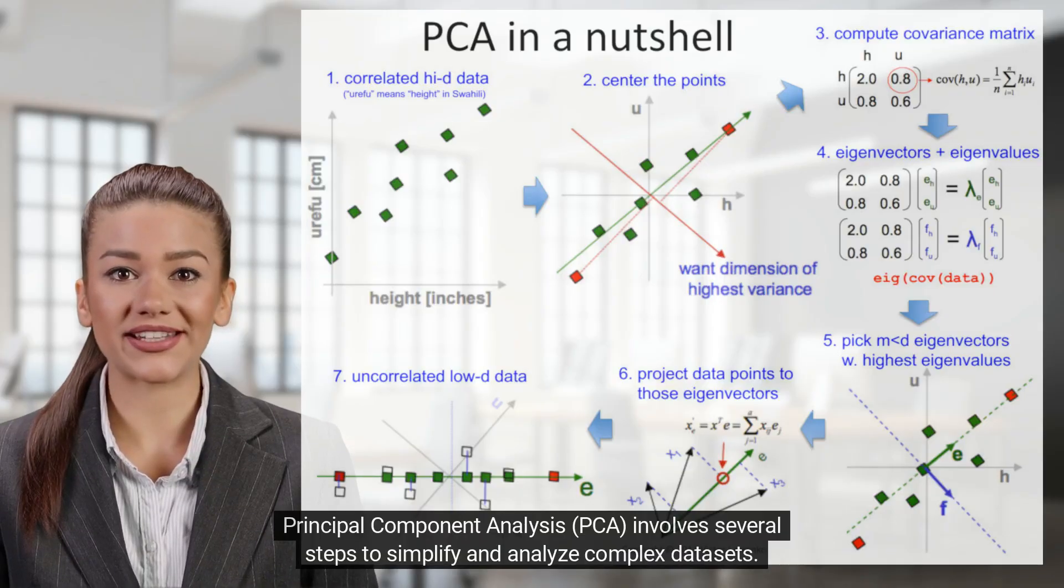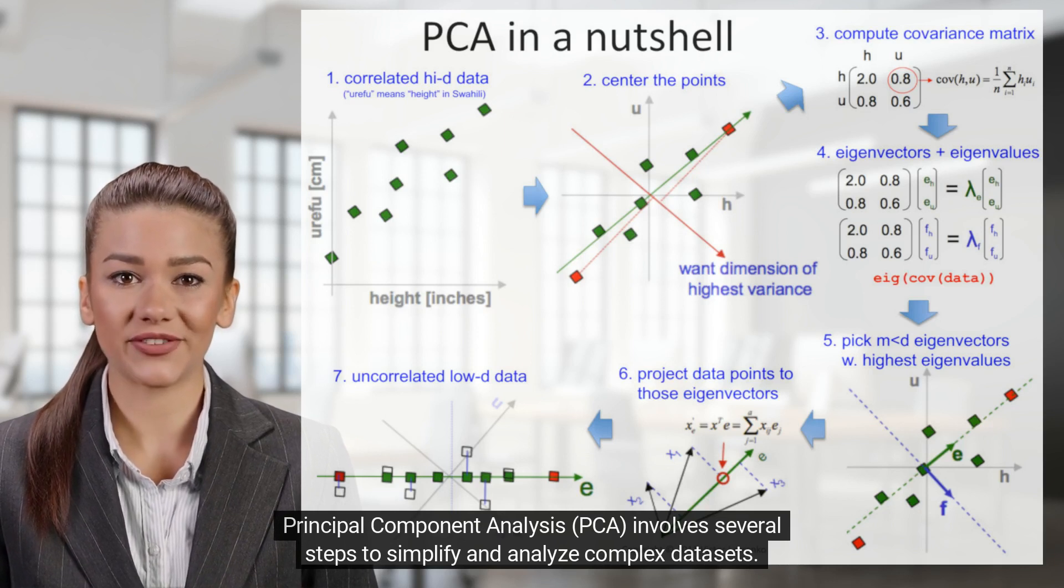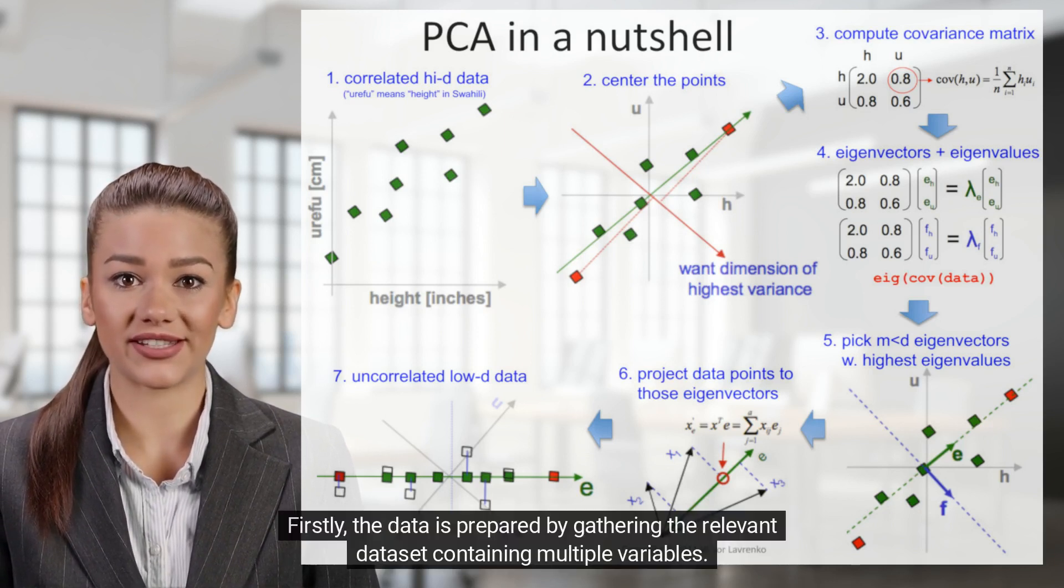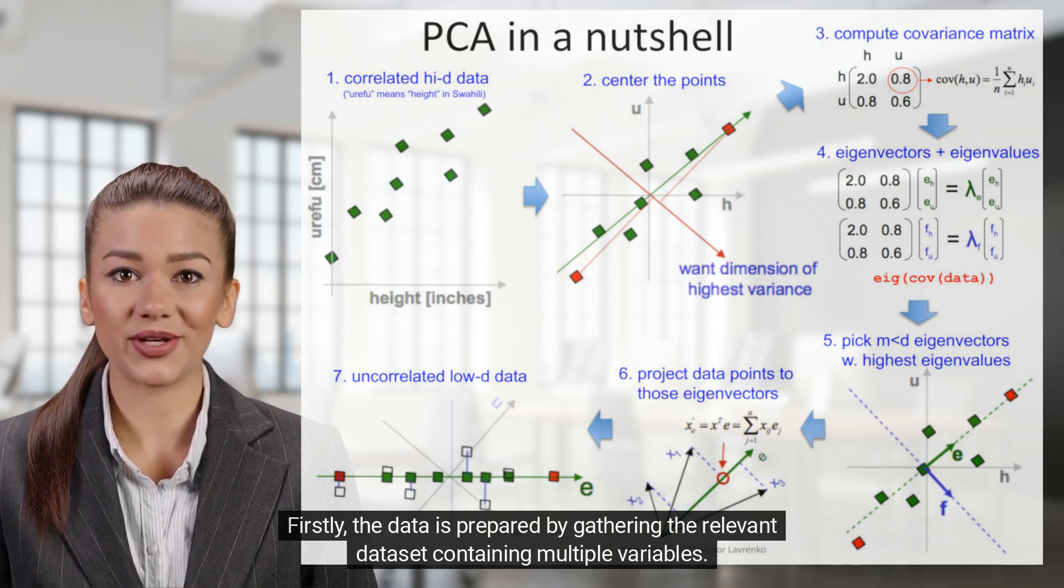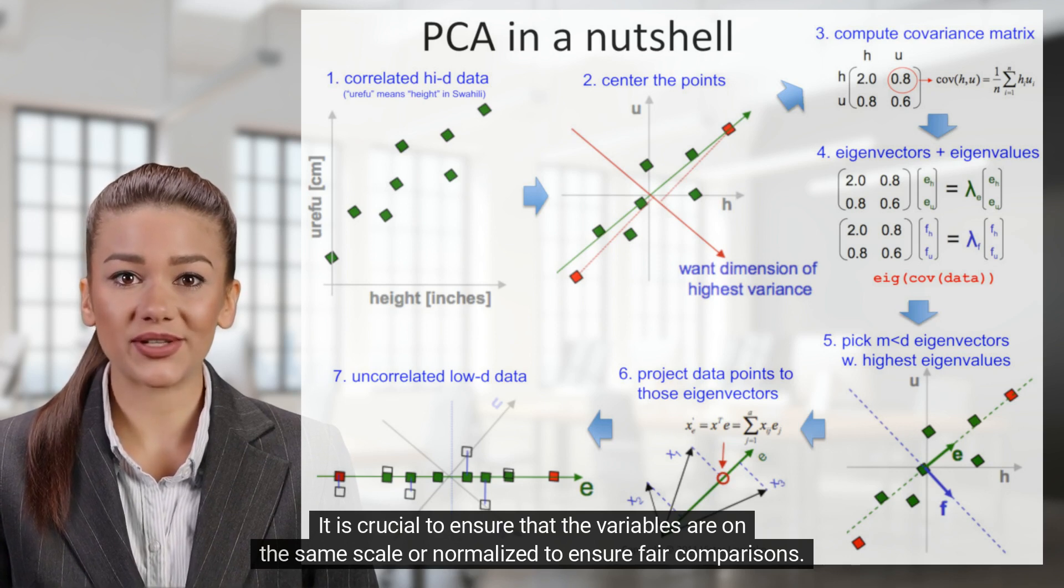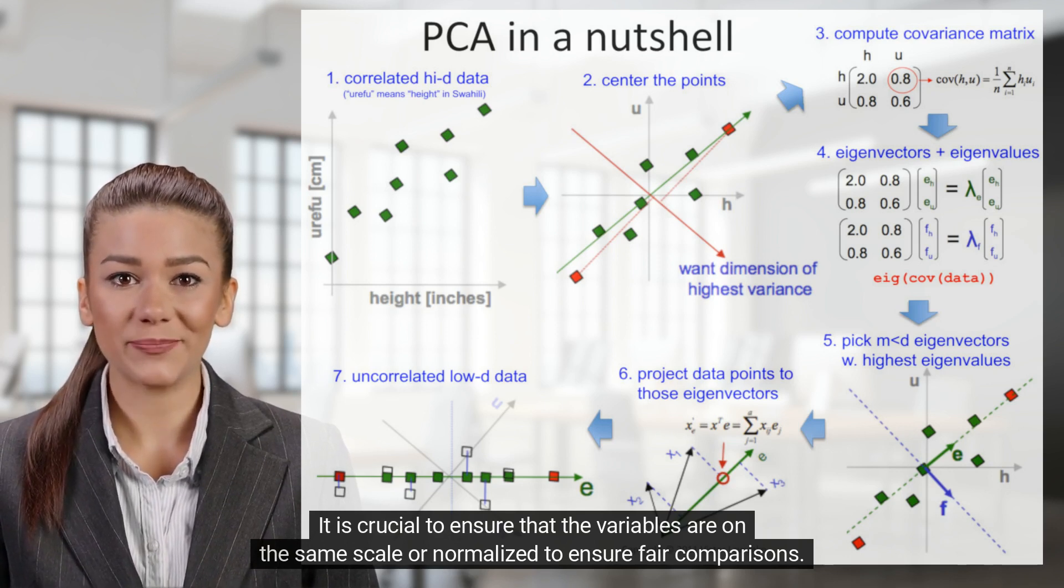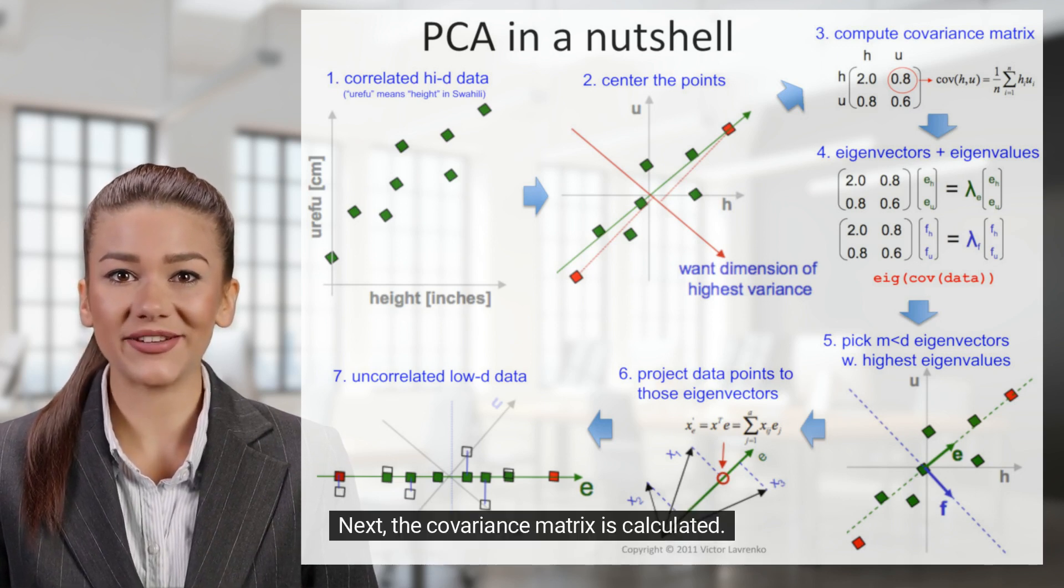Principal component analysis, PCA, involves several steps to simplify and analyze complex datasets. Firstly, the data is prepared by gathering the relevant dataset containing multiple variables. It is crucial to ensure that the variables are on the same scale or normalized to ensure fair comparisons. Next, the covariance matrix is calculated.